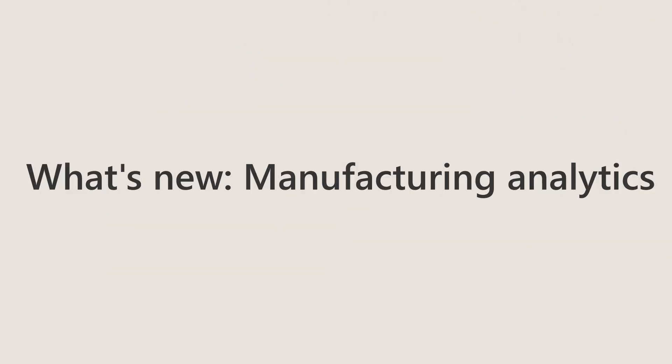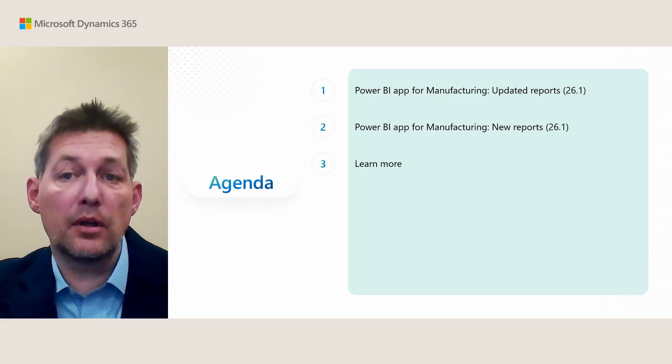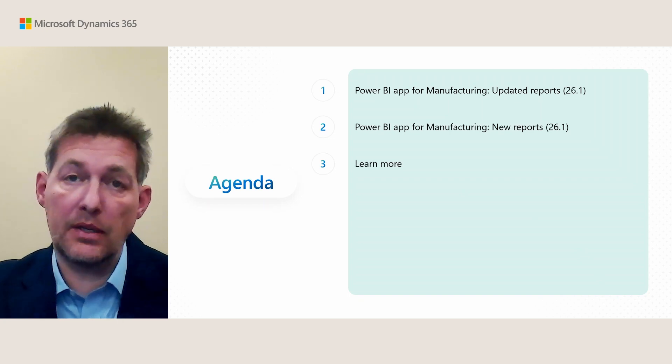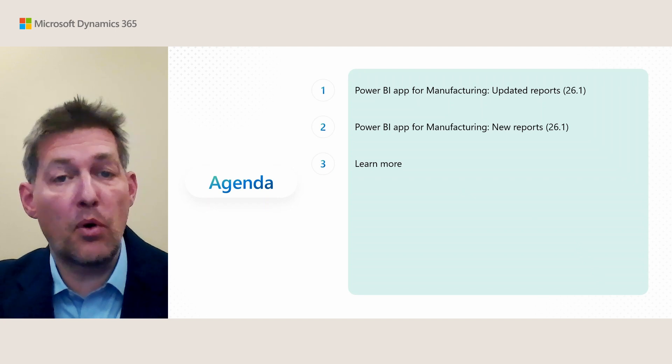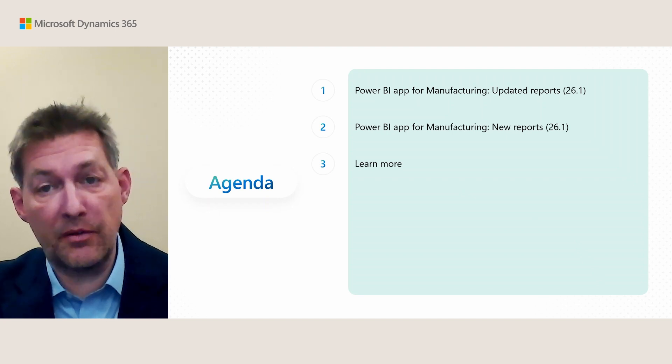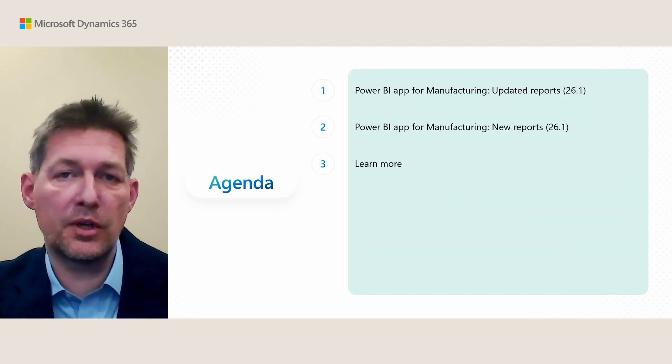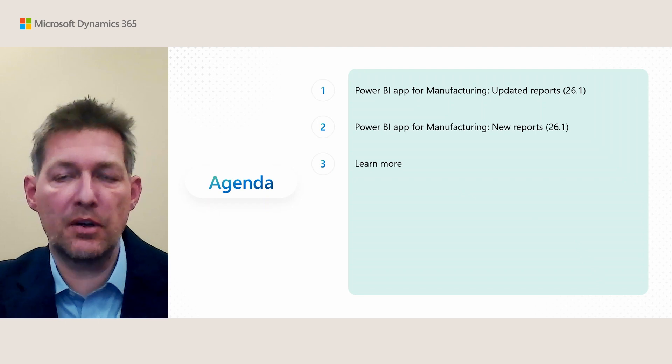In 2025 release wave one, we are releasing a really big change or update to the manufacturing analytics. In this video I will show you what we have done in the Power BI app. There's also a different video that is only about the modernization of the legacy reports in manufacturing. Here we're going to talk about updated reports in the Power BI app — note that all of this is coming in version 26.1 — new reports surfacing in the Power BI app for manufacturing, and some learn more links if you want to dive into the specifics of analytics for manufacturing.